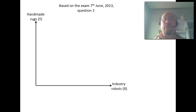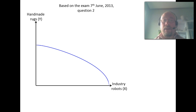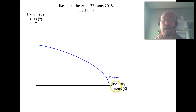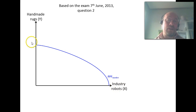Sweden, which is a rather small but rich country, would be capital-abundant. Therefore the production possibility frontier in Sweden would show that we could produce relatively much of the capital-intensive good — industry robots — but not that much of the labor-intensive good, handmade rugs.